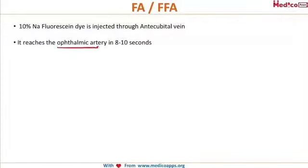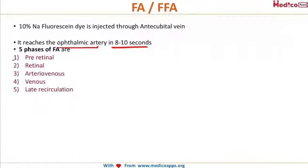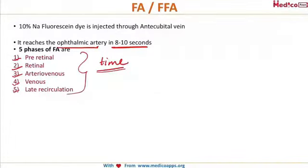The dye reaches the ophthalmic artery in 8 to 10 seconds, after which it has five phases: the pre-retinal phase, the retinal phase, the arteriovenous phase, the venous phase, and the late recirculation phase. These phases are determined by the time at which the images are taken, and depending on the timing, you classify which of the five stages the dye is in.